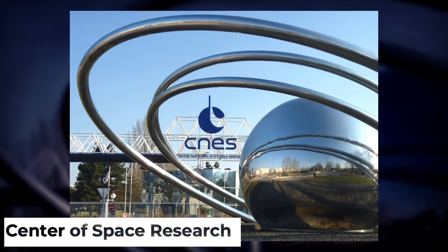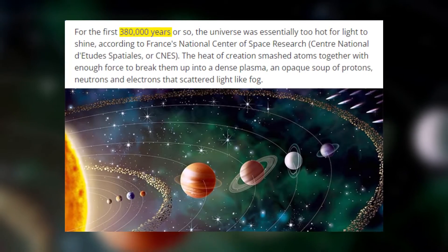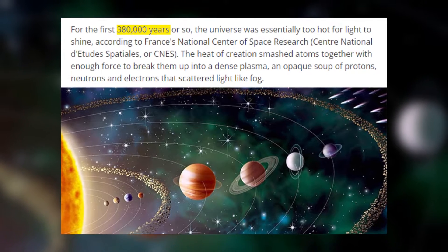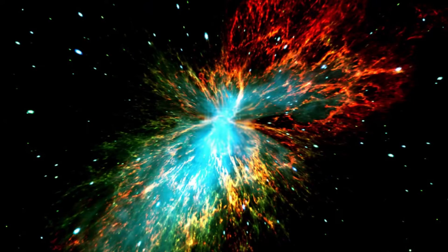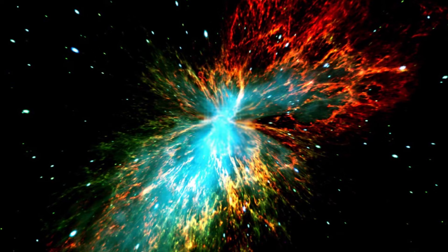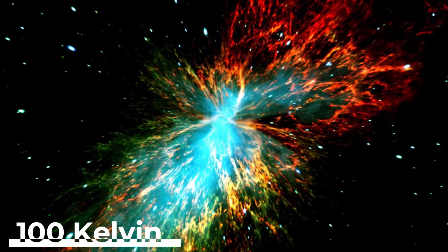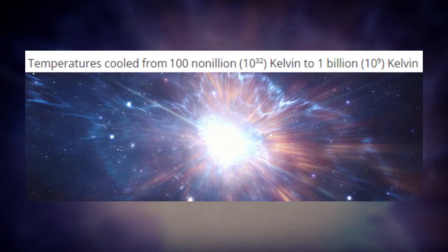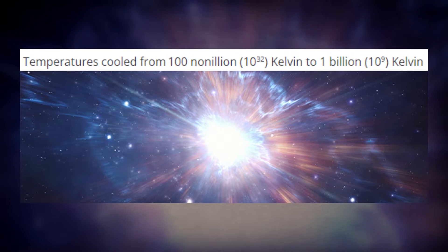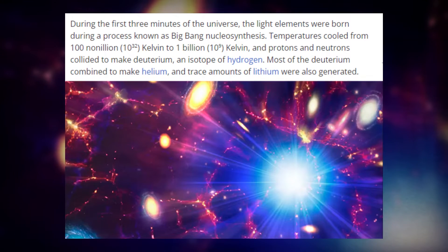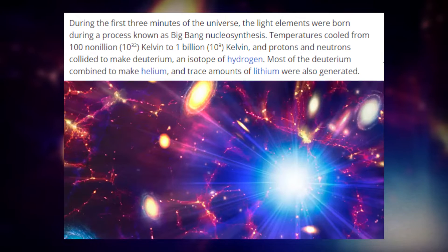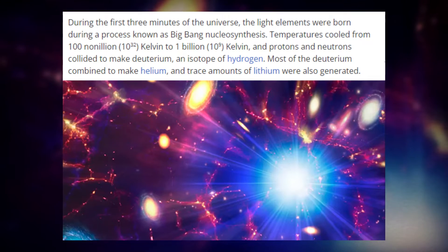According to France's National Center of Space Research, during the initial 380,000 years, the universe was essentially too hot for light to shine. During the cosmic inflation, background radiation was present at around 100 Kelvin. The temperatures cooled from an incredible 100 nonillion Kelvin to 1 billion Kelvin, resulting in collisions between protons and neutrons that created deuterium, an isotope of hydrogen.